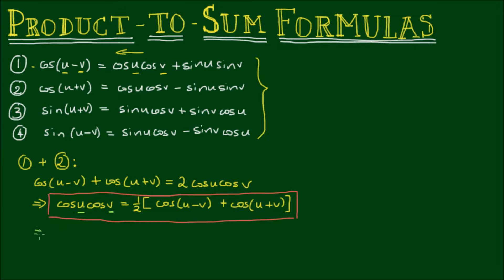this yields cos²(u) is equal to 1/2 of [cos(0) plus cos(2u)], which is equal to 1/2[1 plus cos(2u)]. And this of course is the half-angle formula for cos². Now let's add equations 3 and equations 4 together.